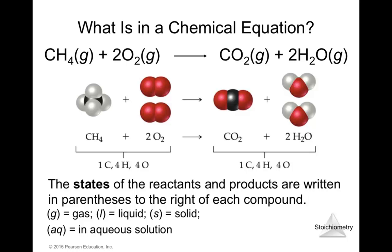In chemical equations, you need to mention the state of the reactants and products, usually shown in parentheses. G is for gas, L is for liquid, S is for solid, and AQ is for aqueous solution. Water is a pure liquid so you use L, but a solution of glucose or sodium chloride uses AQ. These are the four most common abbreviations for states.